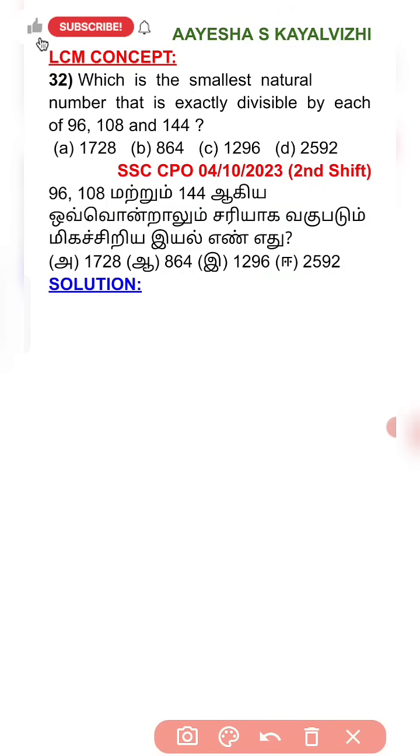Let's talk about LCM concepts. Which is the smallest natural number that is divisible by each of 96, 108 and 144? Natural numbers start from 1, 2, 3, 4 and so on.